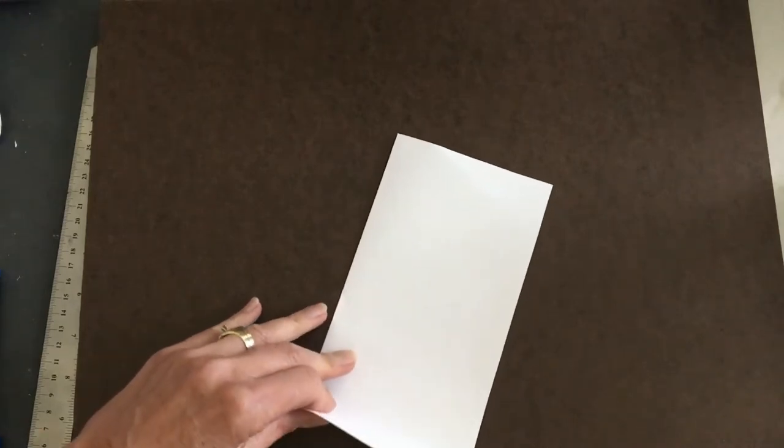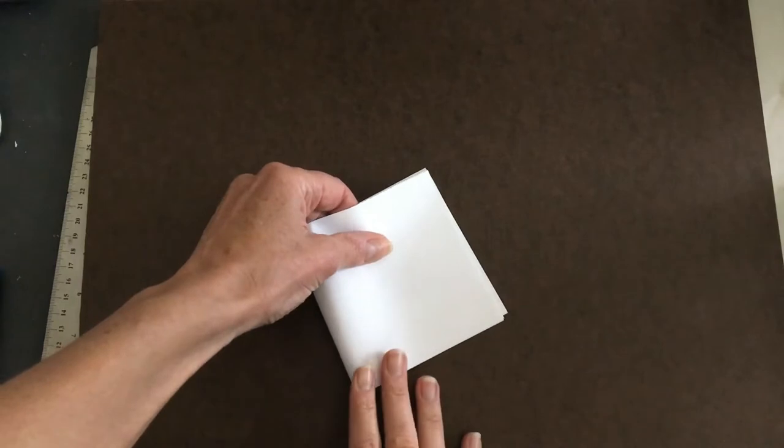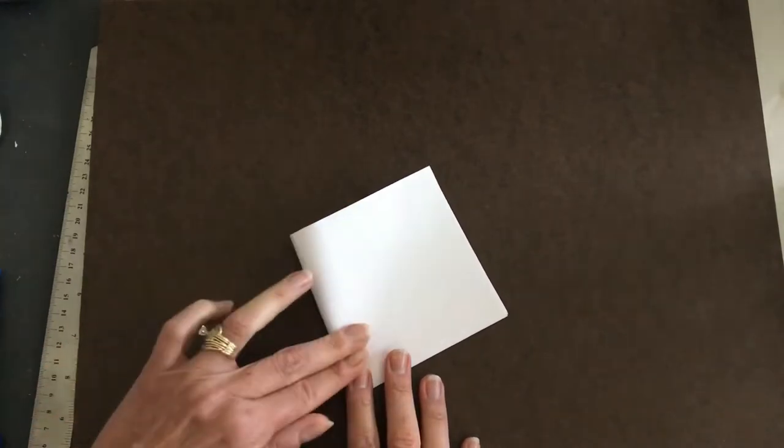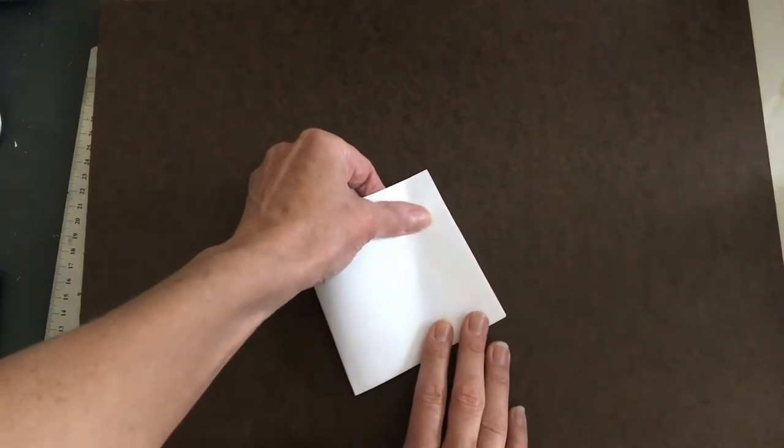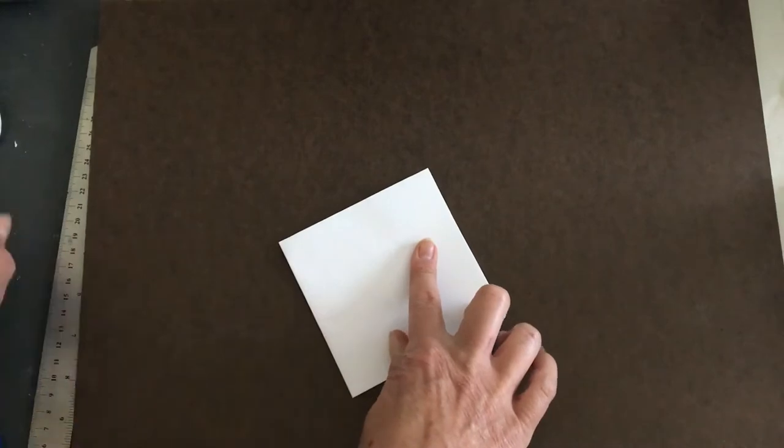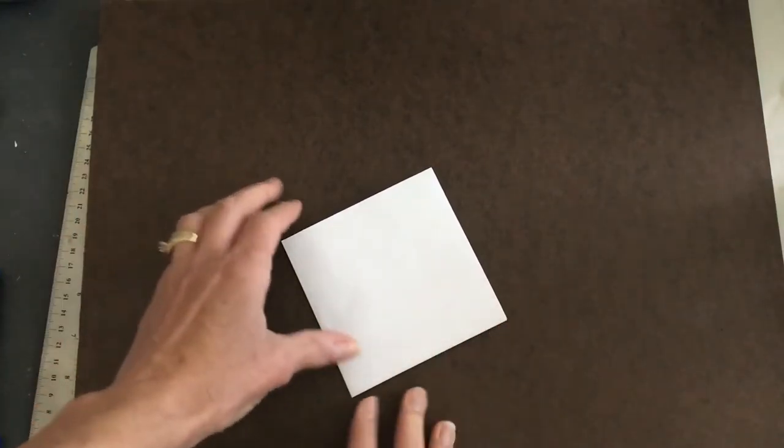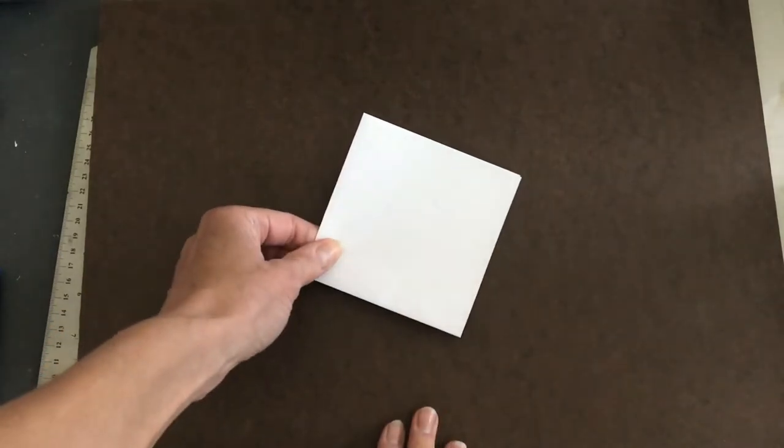The second fold is folding the piece of paper that we folded in half in half again. Just make sure that you register the corners before you do your creasing. It's okay if it's off just a little bit but you're going to have a better result if you have good alignment.